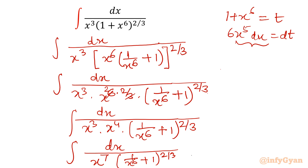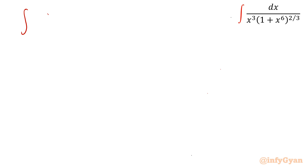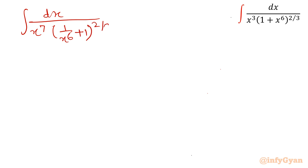Now it looks like if we substitute the bracket, we will have x⁷ in the denominator. Our major task is done. Let us consider the bracket equal to t³ this time — why? Because the power 3 appears here from the 2/3 exponent. So we give the substitution: (1/x⁶ + 1) = t³.